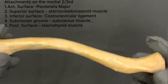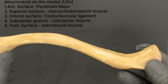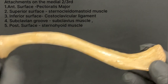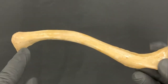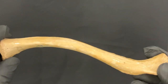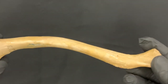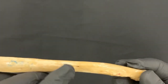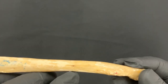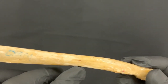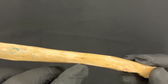The posterior surface close to the medial end gives origin to the sternohyoid muscle. The nutrient foramen transmits a branch of the suprascapular artery.